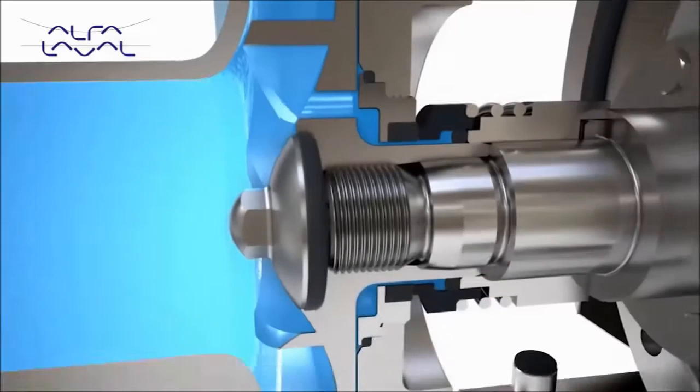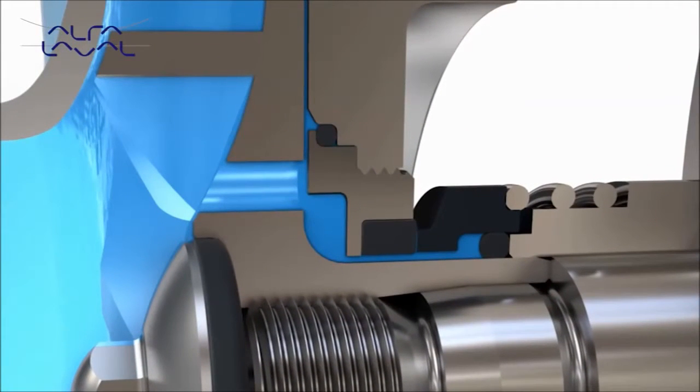Owing to the balanced design of the shaft seal, the LKH is not susceptible to leakage due to high pressure or pressure shock. Product pressure attempting to open the seal is counteracted by product pressure under the seal face, which results in balancing the seal. In addition, spring pressure also aids in maintaining a closed seal.